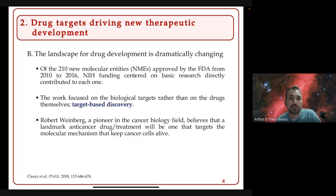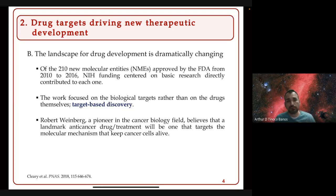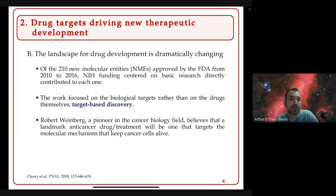The landscape for drug development has changed. A study in PNAS 2018 points out that of the 210 new molecular entities (NMEs) approved by the FDA from 2010 to 2016, NIH funding centered on basic research directly contributed to each one. This means many FDA-approved drugs came from NIH funding, and it is the basic research that has guided drug discovery — work focused on biological targets rather than the drugs themselves. This is what's known as a target-based discovery approach.